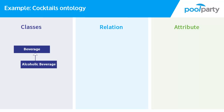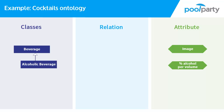Going back to our example, we could add attributes to each of the classes we have defined. We could create an attribute for beverage that is called image, which you could use to link your concept to an image of that concept stored somewhere else. Since alcoholic beverage is a subclass of beverage, all members of the class alcoholic beverage would also be allowed to have the attribute image. We can also specify an attribute for alcoholic beverage called percent alcohol per volume, which will only be available for concepts of the class alcoholic beverage.